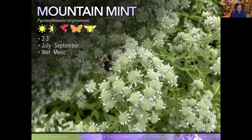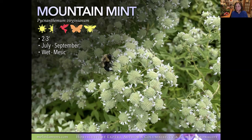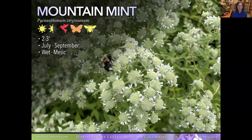Mountain Mint — don't let the common name fool you; it's not like common mint. You can plant it with equally assertive plants to keep it in check, or do a little dividing. It does like moist to wet soil, so it's perfect in the wetter parts of your garden. Very unique-looking flowers with tubular blooms on the outer edge of the heads, giving a nice, different look to the garden. Hummingbirds and pollinators love it.